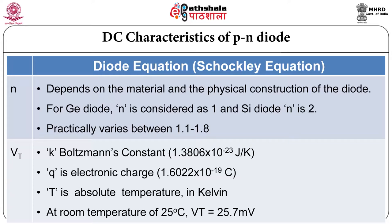V_t is also called the thermal voltage. If you calculate this thermal voltage, you will get at 25 degrees centigrade, thermal voltage is 25.7 millivolt, where k is the Boltzmann constant and q is the electronic charge.